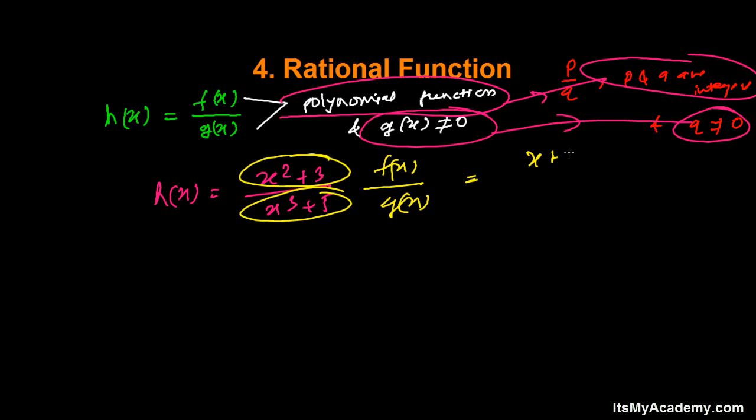Or you could say x plus 5 divided by x to the 9 plus x to the 10. So here, this is f(x) and g(x). These are two individual polynomial functions in a ratio, so that's why we can say this is a rational function. And again, we cannot predict the graph of the rational function.